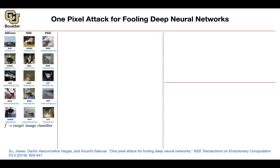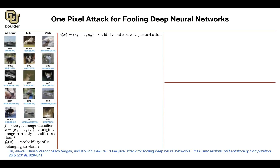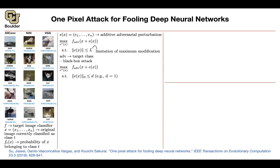What is the math behind it? We have a target classifier and an original image correctly classified as class t. We denote f_t(x) as the probability of x belonging to class t. We look for additive adversarial perturbations. We have a target class called 'adb' and we want to increase the probability of that target class by adding a small perturbation. We don't have access to f — only evaluate it — and we focus on the L0 norm, which counts the number of pixels that differ.